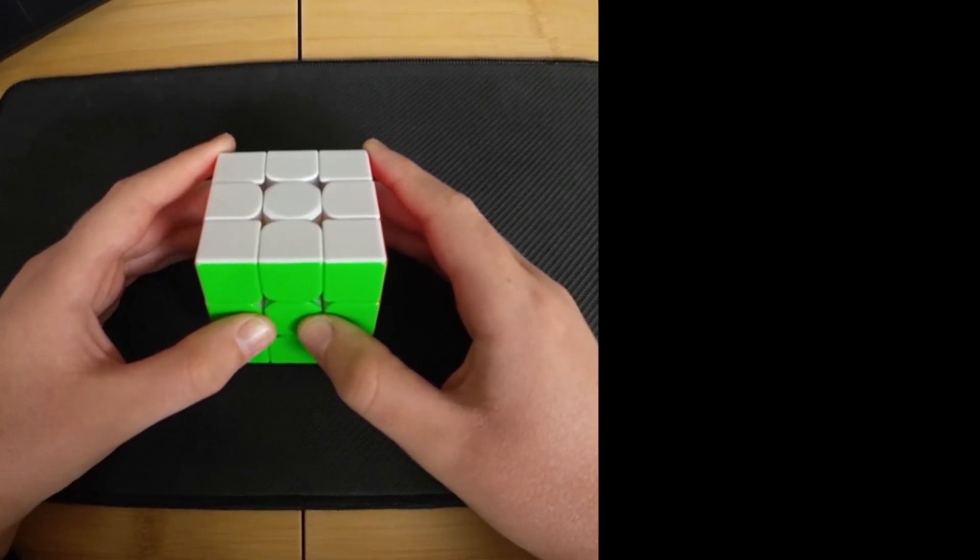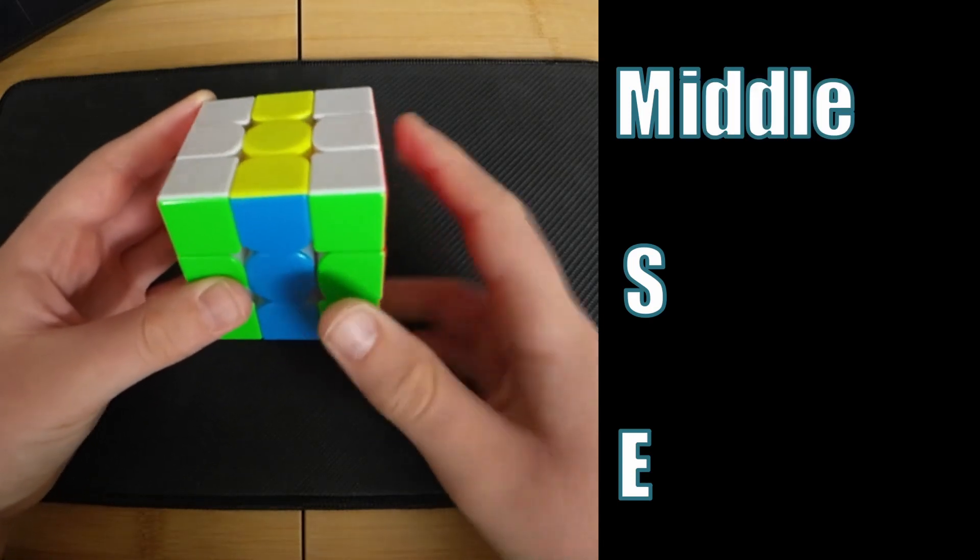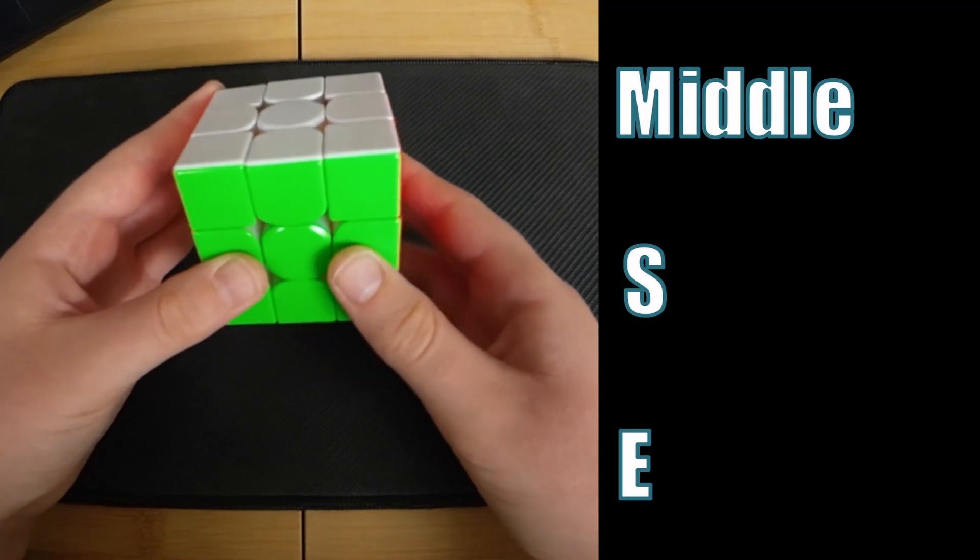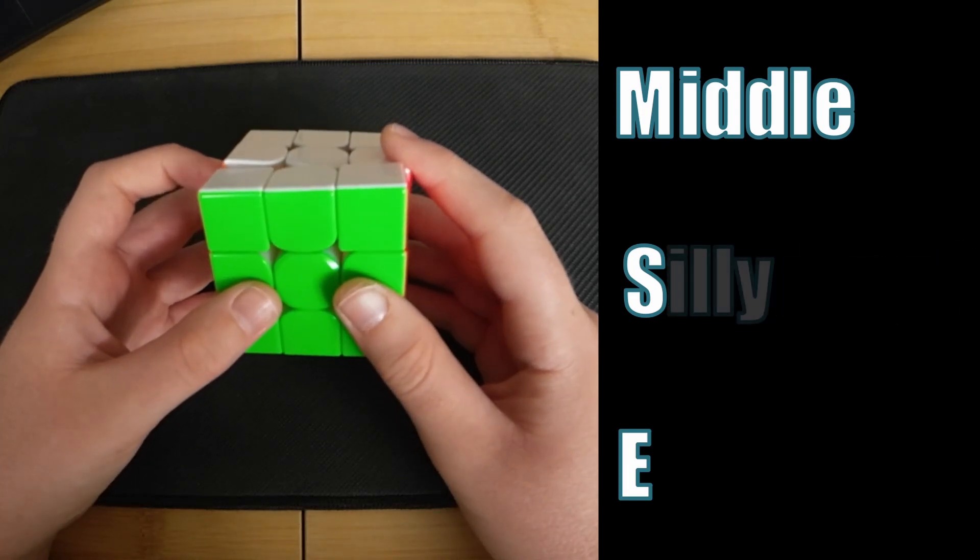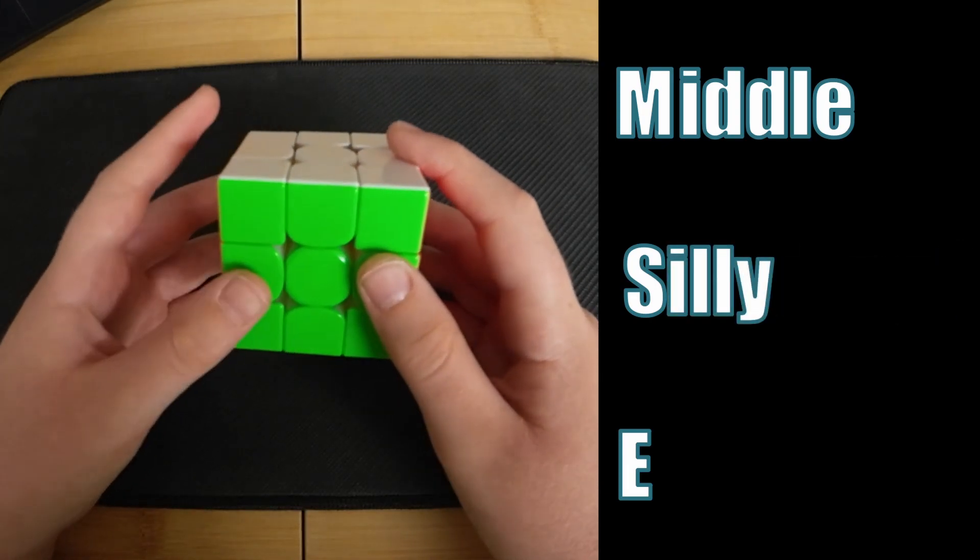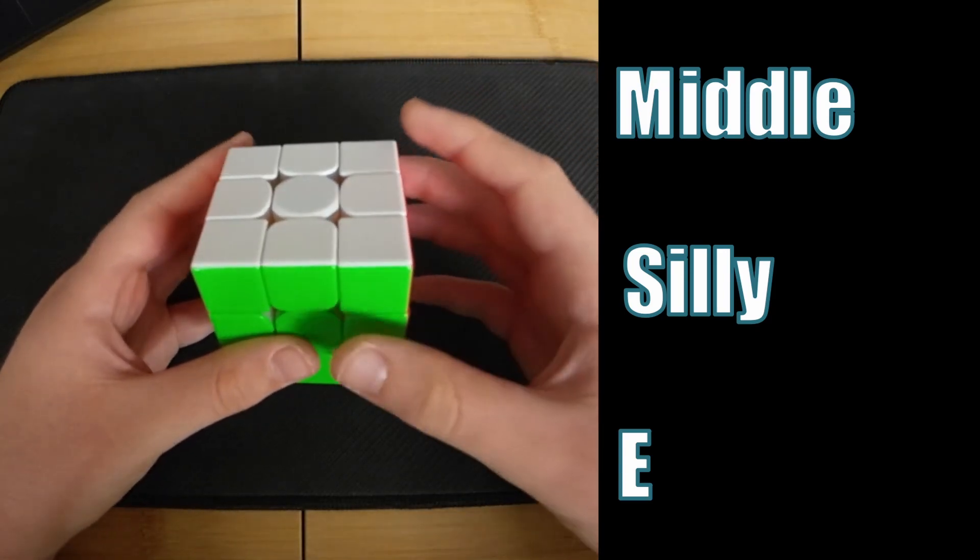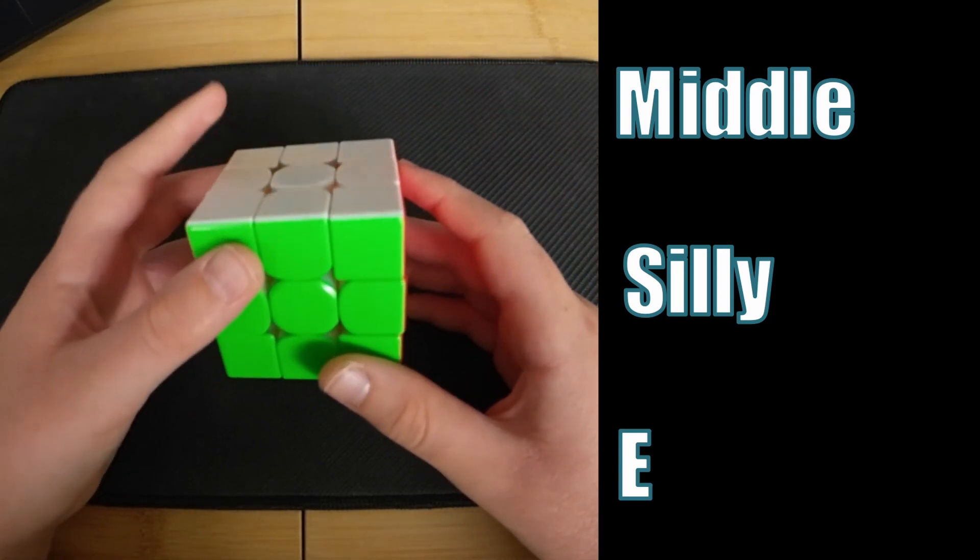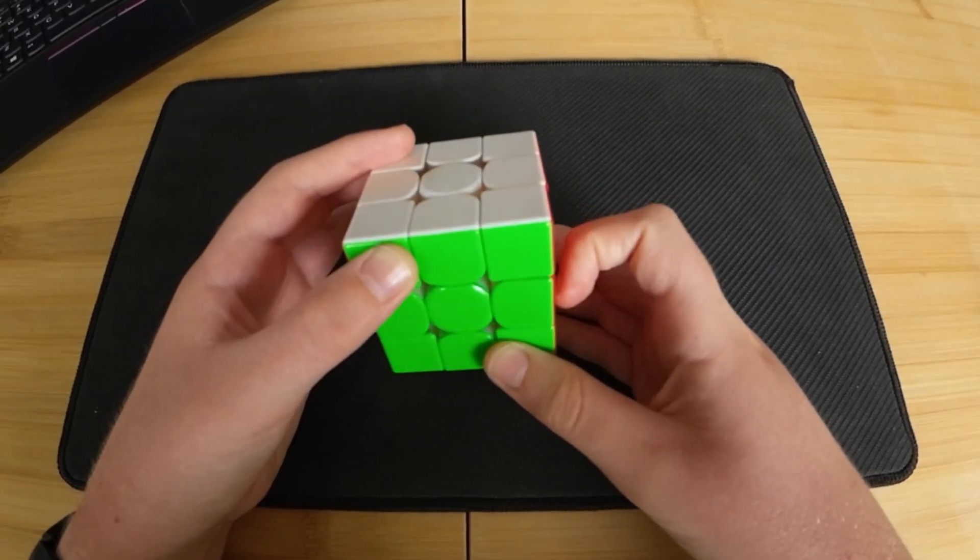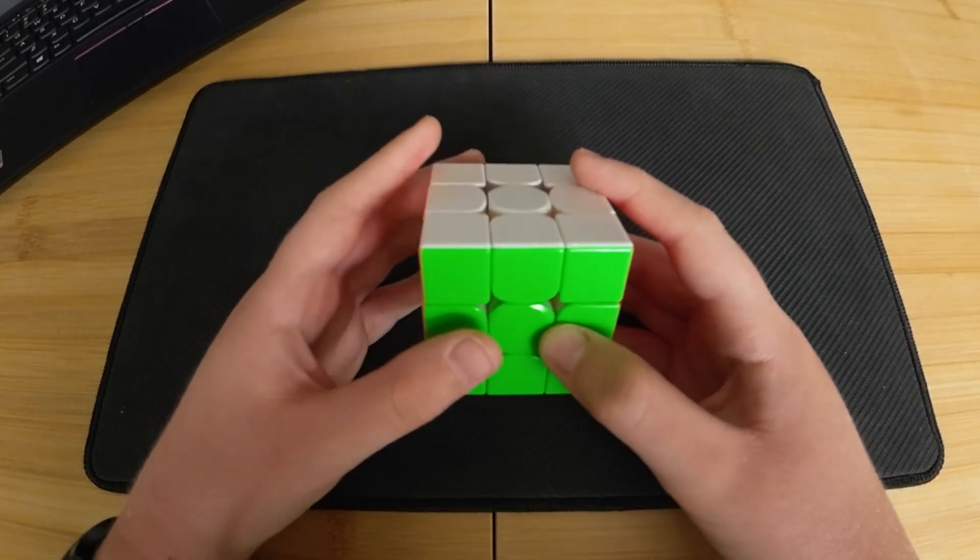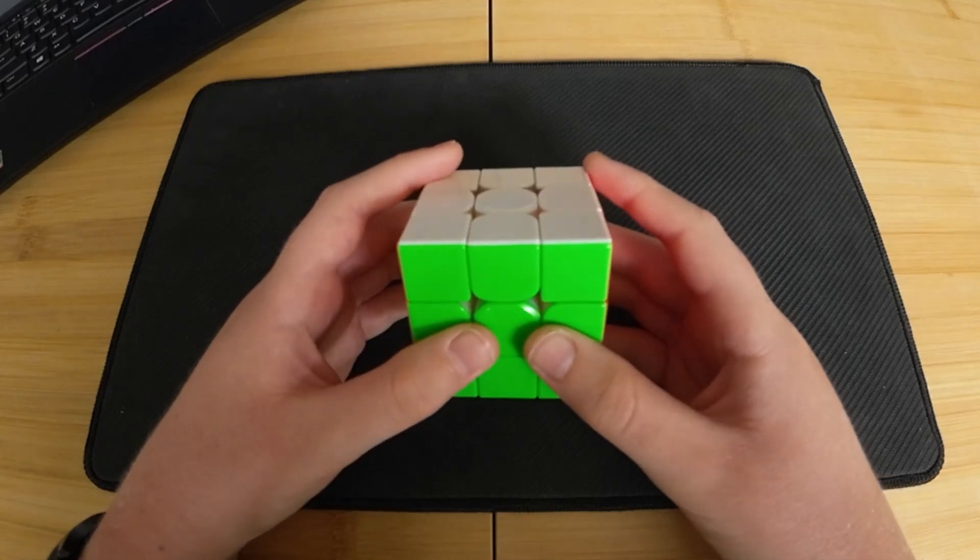The second more advanced thing to note is slice moves. There are three slice moves: M, S, and E. M is for middle, so it's the middle layer in between these two. S apparently stands for standing, but I like to pretend it stands for silly because the M slice is standing as well. So the S slice is going to be like this, going along like this. And then E stands for equator because it goes along the middle just like the equator. For slice moves, depending on which way you think about it, either direction can be clockwise or counterclockwise. This means that we have to know which way to think about it in order to get it right.